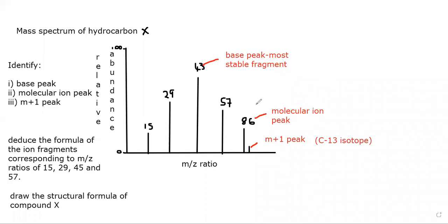I'm going to give you a simple method to identify these structures easily and quickly. Your molecular ion peak — remember, this is a hydrocarbon, consisting of carbon and hydrogen only. So we have a compound made up of only carbon and hydrogen.